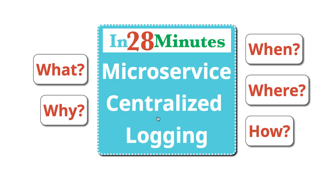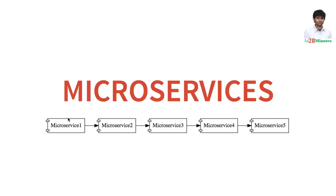Whenever we are talking about microservices architectures, we are talking about a number of microservices talking to each other — small microservices having a lot of communication between them. Let's say there is a problem in microservice 5 and because of this, microservice 1 is throwing an error. When a developer gets the information that there is an error in microservice 1, he should be able to find out what happened — what was the request that came out of microservice 1, what happened at microservices 2, 3, 4 and 5. He wants to be able to see the entire trace.